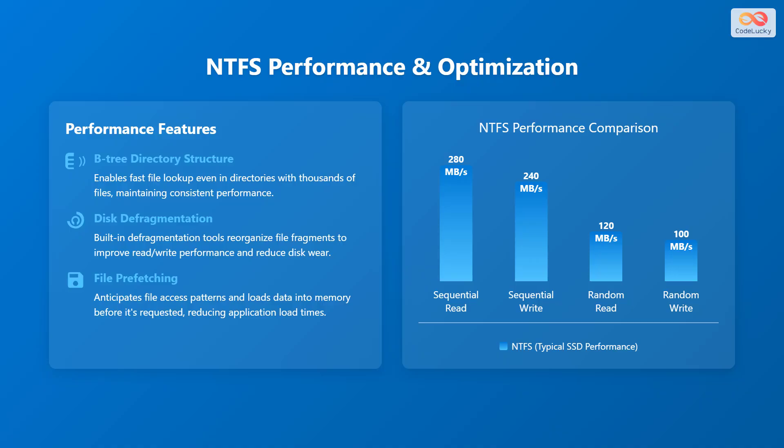An NTFS performance comparison chart shows typical SSD benchmarks: sequential reads reach 280 megabytes per second, sequential writes reach 240 megabytes per second, random reads reach 120 megabytes per second, and random writes reach 100 megabytes per second.